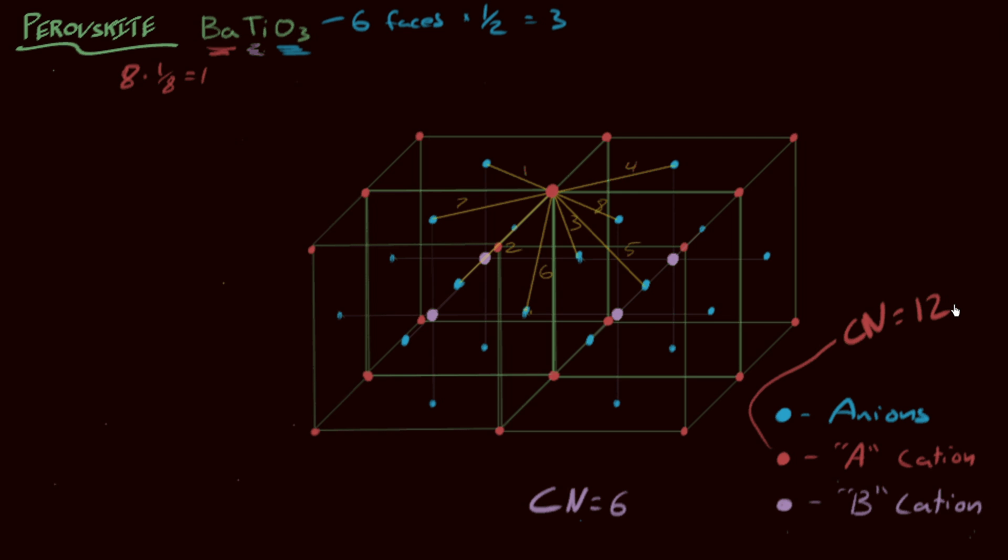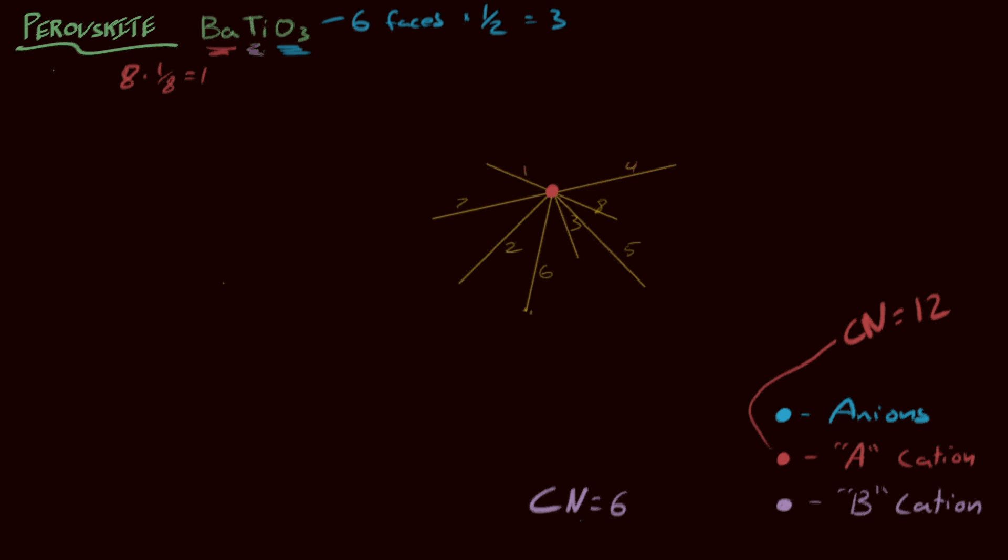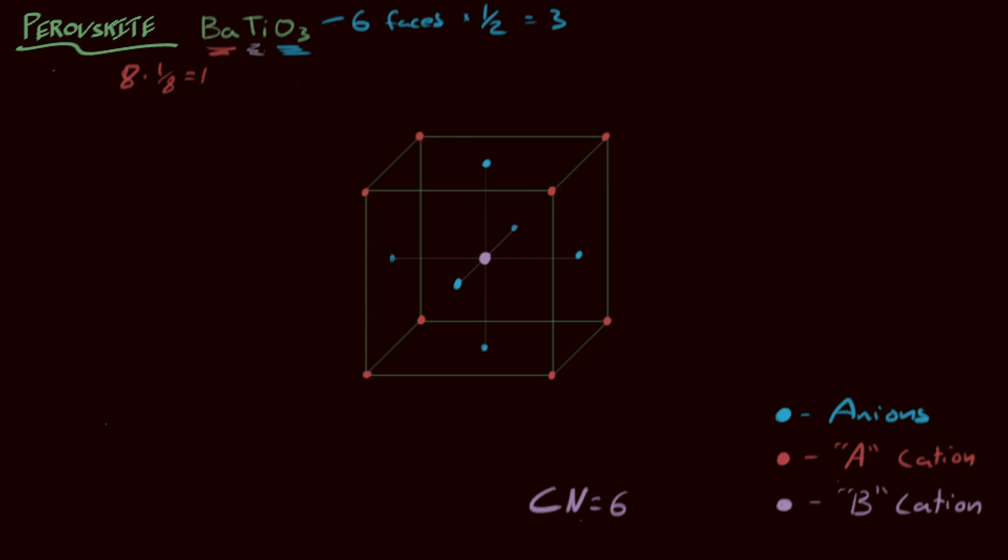Now, in fact, the anions are linearly coordinated. So that is the anion. Clean this up a second here. Go back to just our original. The anions are only touching along this direction here. So there would be another B cation above, and the anions would have coordination number with their nearest neighbor cations in that direction of two.